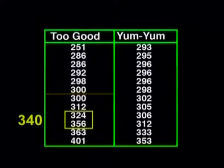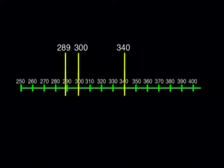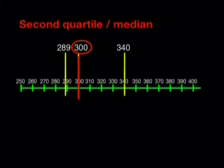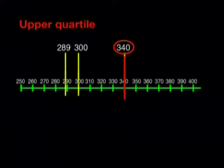By finding these values for the Two-Good patties, we have divided our data into 4 parts or 4 quarters. If we put these values onto a number line, we could show the divisions on the line. The numbers where we've made the divisions are called the quartiles, and there are three of them. The first quartile or lower quartile is 289 grams. The second quartile is the median, at 300 grams. The third quartile is the upper quartile, at 340 grams.